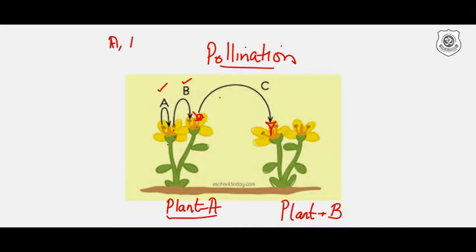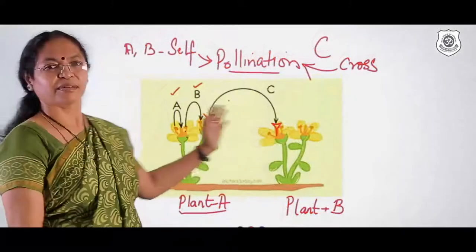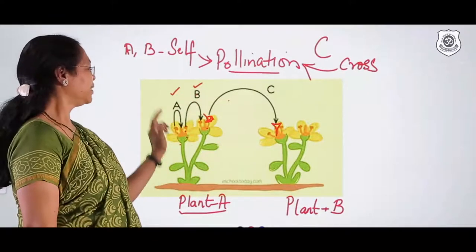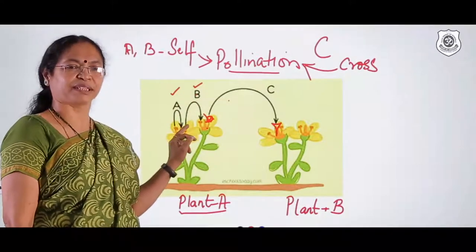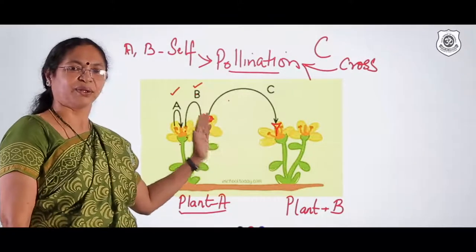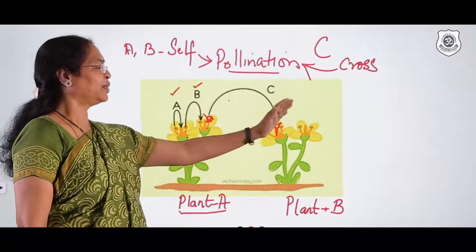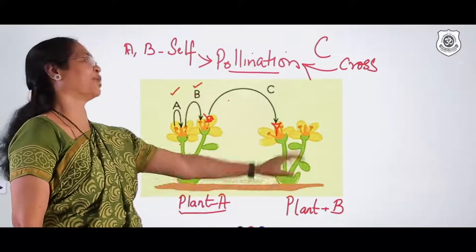Types A and B are called self-pollination. Type C is called cross-pollination. In self-pollination, pollen is transferred to the stigma of the same flower or another flower of the same plant. In cross-pollination, pollen is transferred to the stigma of a flower on another plant of the same species.